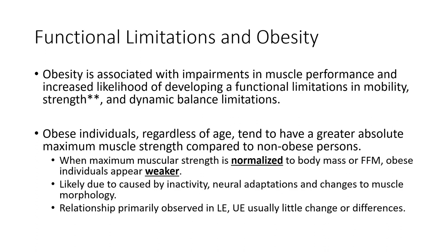We talked about what happens with the center of mass shifting anterior, especially if they have a large pannus. Obese individuals, regardless of age, tend to have greater absolute maximal strength if we look at raw strength. But if we normalize it to body mass or fat-free mass, that relationship changes — it's neutralized. In fact, obese individuals tend to be weaker.